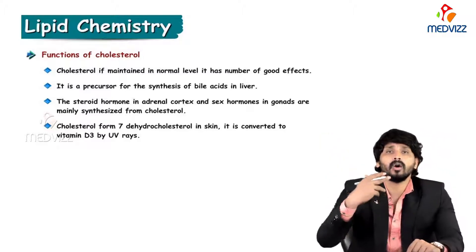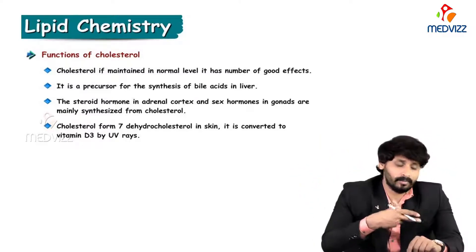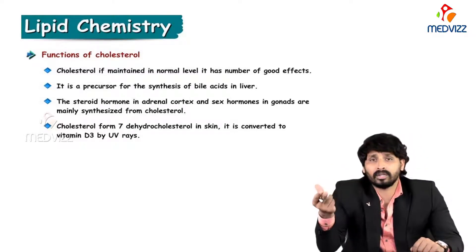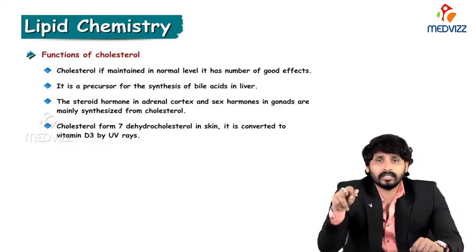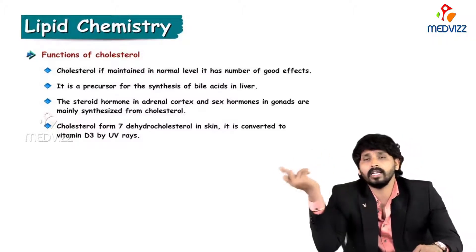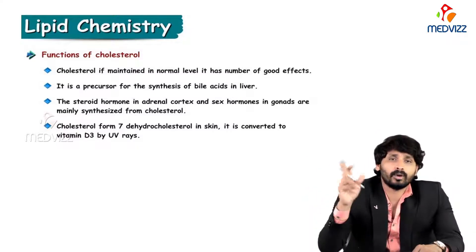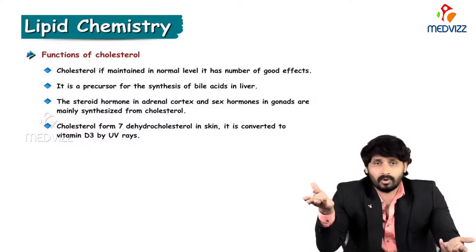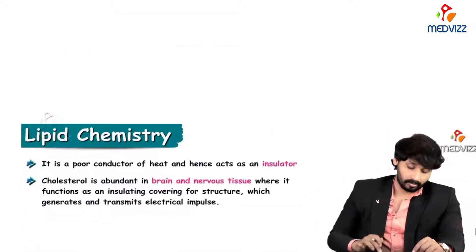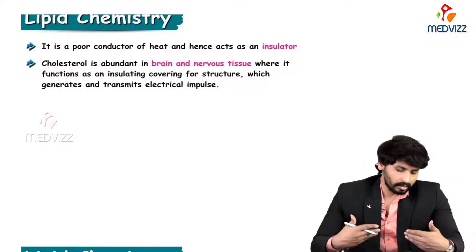Cholesterol is converted from 7-dehydrocholesterol in the skin. When your skin is exposed to sunlight, the UV irradiates the 7-dehydrocholesterol present in the skin. This is then transported to the liver, where enzymatic action converts it to vitamin D2, and finally it reaches the kidney where one more enzymatic reaction forms vitamin D3, known as cholecalciferol, which is required for bone and calcium metabolism.